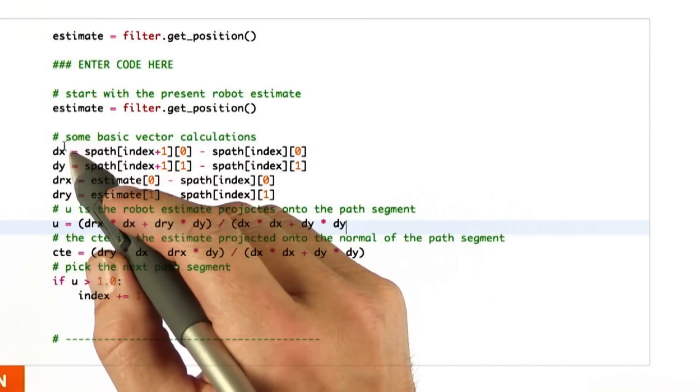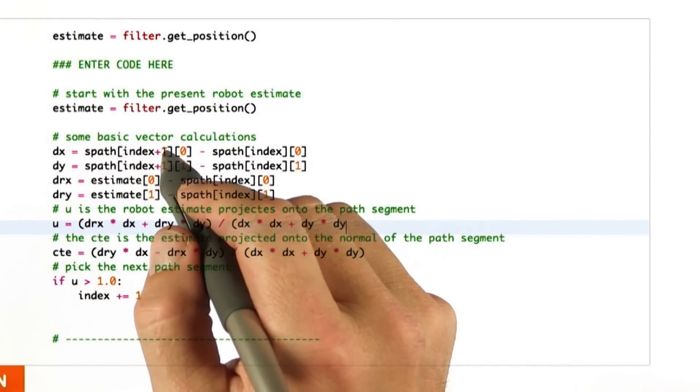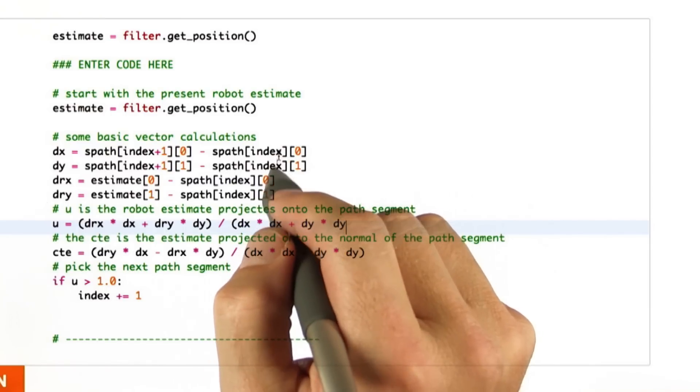So here's my code. I compute the dx and dy the way I told you by using the spath of index i plus 1 minus the same at index.